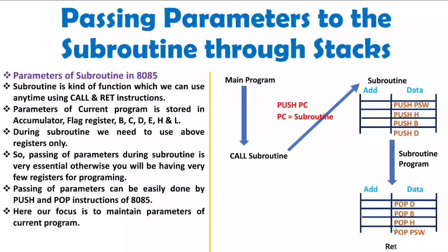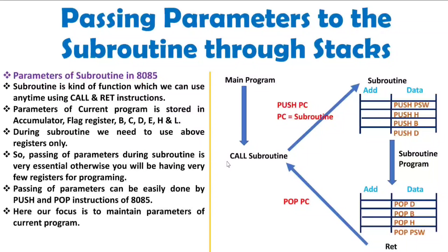Once you execute the RETURN instruction, we need to retrieve control back to the main program. For that, POP PC will get performed — the program counter will have the next address of the instruction in the main program, which was the next instruction after the CALL subroutine instruction. After that, we can execute the main program. So with this, the main program has all registers available, and all these registers were also available for the subroutine.